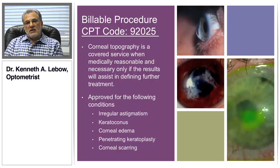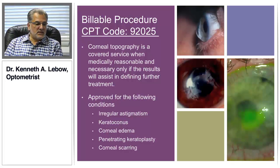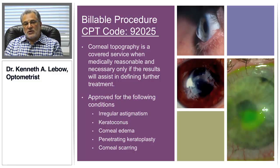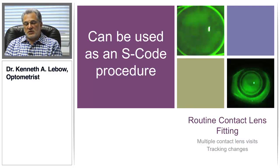Conditions approved for medical reimbursement include irregular astigmatism, keratoconus, pellucid's marginal degeneration, corneal transplants, penetrating keratoplasties, and corneal scarring — all are approved diagnoses for reimbursement of the procedure.